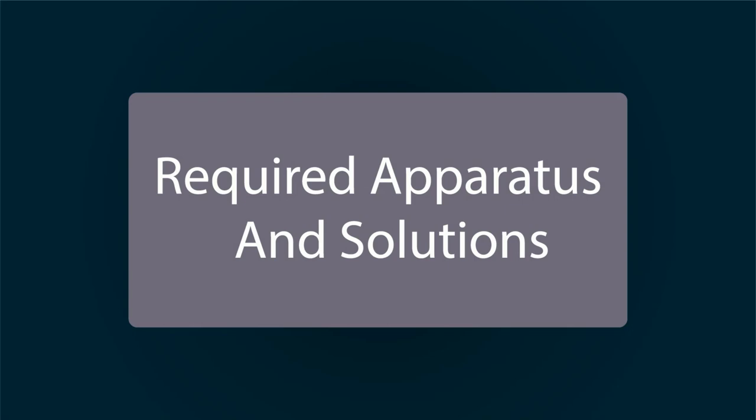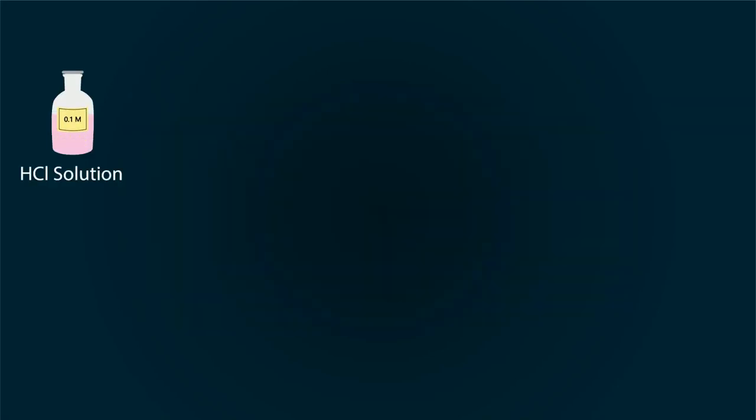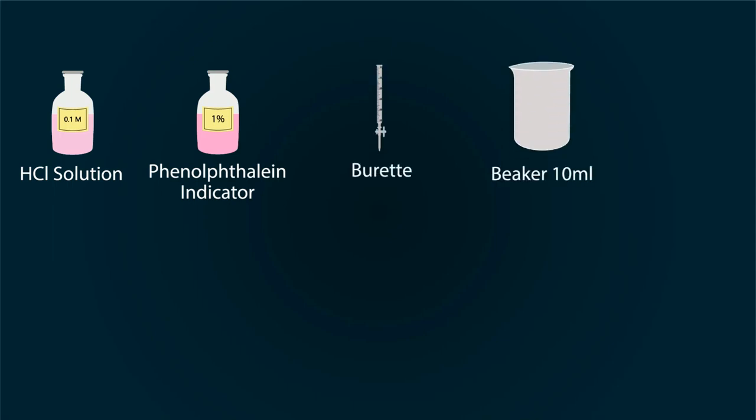The required apparatus and solutions include 0.1 molar HCl solution, 1% phenolphthalein indicator, a burette, a 10 milliliter beaker, a dropper, conical flask, iron stand, a funnel, magnetic stirrer, and magnetic bar.